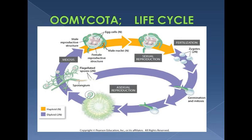This is the life cycle of Oomycota. The filamentous structures produce flagellated spores — motile spores having flagella — produced by mitosis, so they are diploid (2n). They germinate into the complete body. Oomycota produce primary zoospores and then secondary zoospores which differ in their flagella: one has apical and the other has lateral flagella. They may undergo encystment during unfavorable conditions and later develop into the complete filamentous body — this is the asexual cycle.